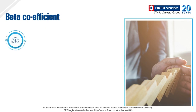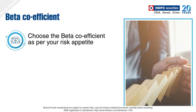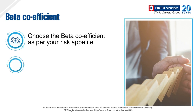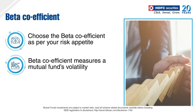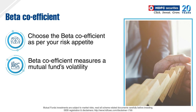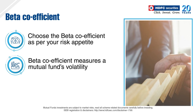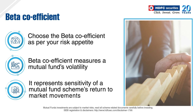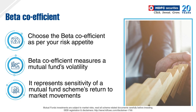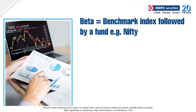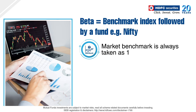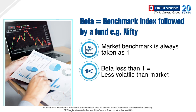Another factor to consider while choosing a good mutual fund is its beta coefficient according to your risk appetite. The beta coefficient measures a mutual fund's volatility or systematic risk in comparison to the market as a whole. It represents how an investment's returns will respond to market movements. For mutual funds, the market typically refers to the benchmark index followed by the fund, for example, NIFTY. The benchmark index is always taken as 1.0. Any beta less than 1 indicates that the fund returns are less volatile than market returns of the benchmark index.